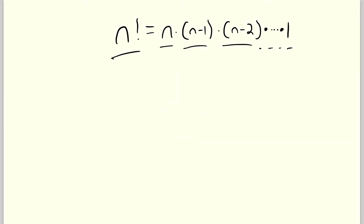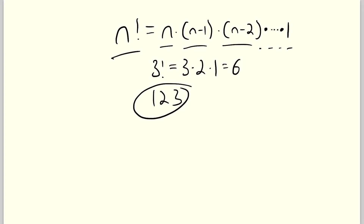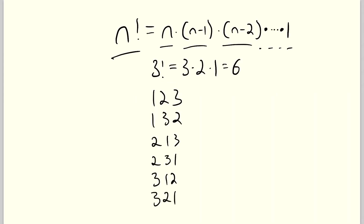So let's look at an easy example of factorial: 3 factorial, which is just equal to 3 times 2 times 1, which equals 6. Now in practical applications, the factorial is just the number of ways we can order this many distinct objects. So 3 factorial is the number of ways to arrange three distinct objects, and that number is 6. So let's say we had the objects 1, 2, and 3. Here is one way we could order them, here's a second way, here's a third, a fourth, a fifth, and finally a sixth way.